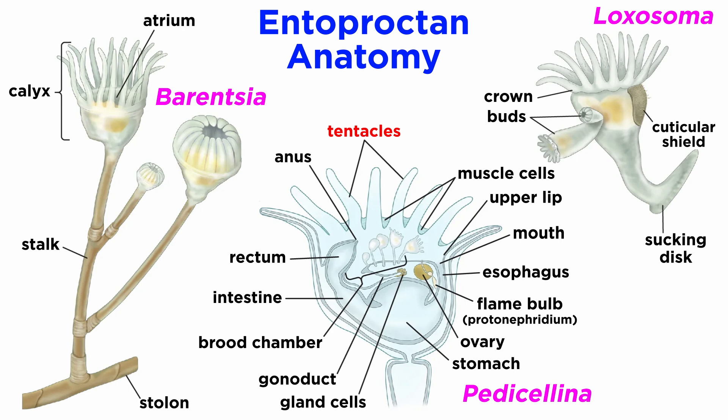In order to feed, their ciliated, mucus-covered tentacles are used to draw food down to the mouth at the end of the buccal funnel. From the mouth, food is moved to the stomach where it is digested using microvilli. Solid wastes are ejected through the anus, which is located within the tentacle-rimmed crown, hence the phylum name Entoprocta, meaning inside anus.